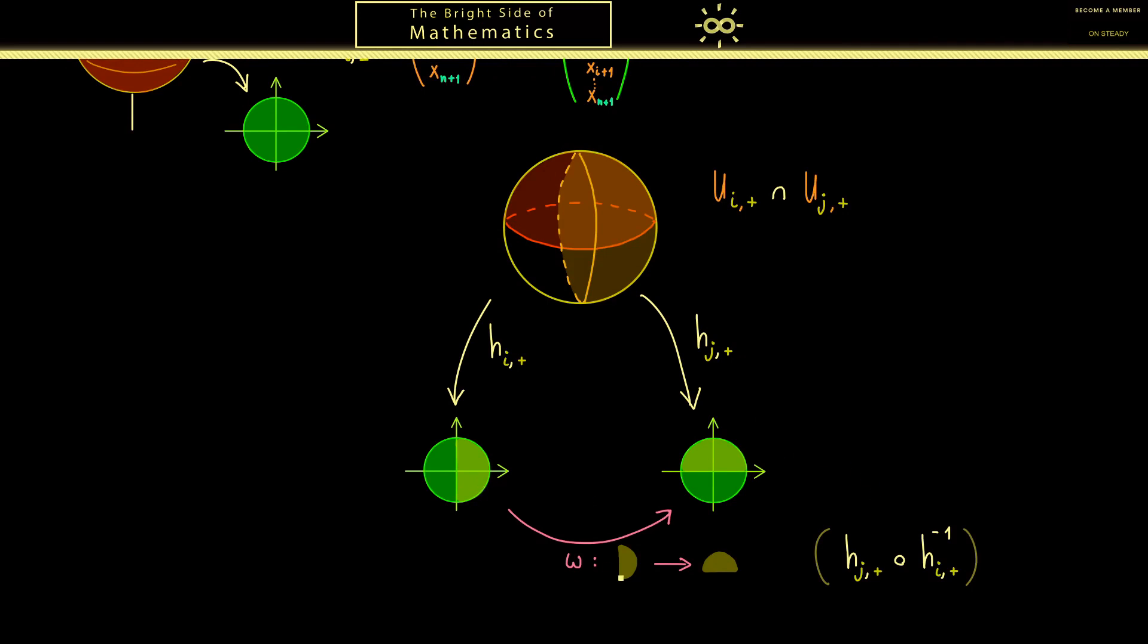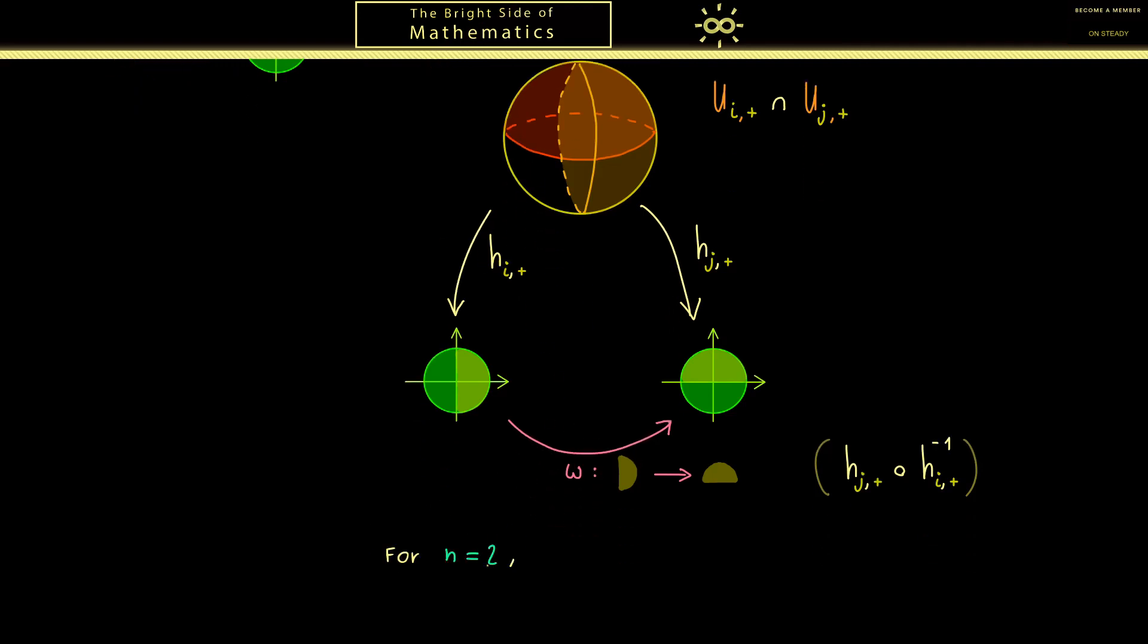Now I think it's helpful to calculate this map for the example we have sketched here. In other words, n is equal to 2, i is equal to 3, and j is equal to 1. Now in a very concrete way, we know what these two maps here do. Let's go step by step.